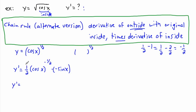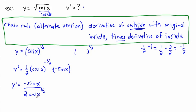Now let's rewrite it neatly. A negative exponent moves the term to the denominator. On top we have 1 times negative sine x, so just negative sine x. On the bottom we have 2, and cosine x to the positive one half. We can write cosine x to the one half as a square root.